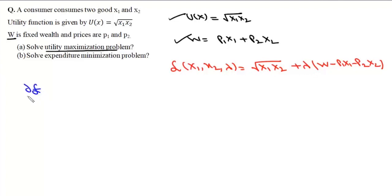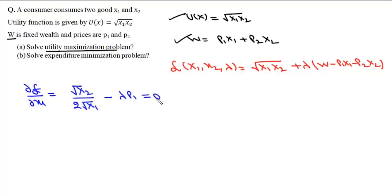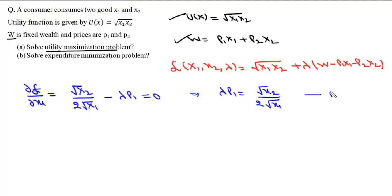First we find ∂L/∂x1 = √x2 / (2√x1) − λ·p1 = 0. From here we write λ·p1 = √x2 / (2√x1), and this is our first equation.